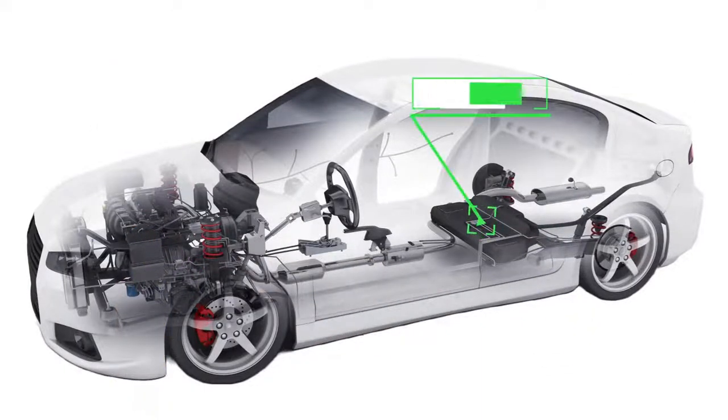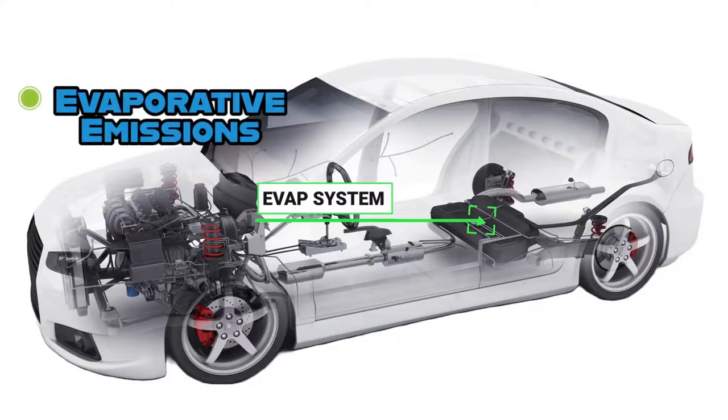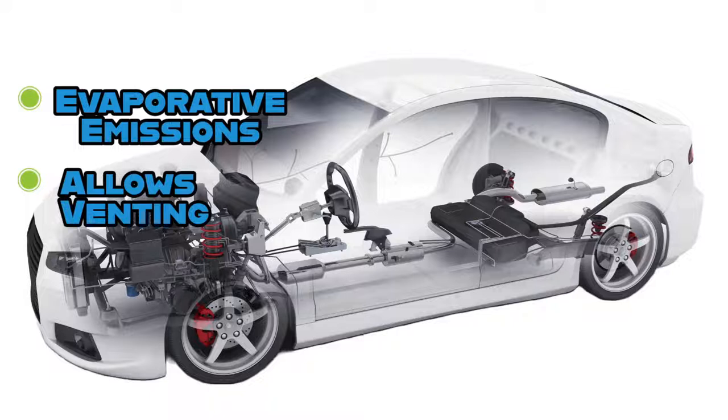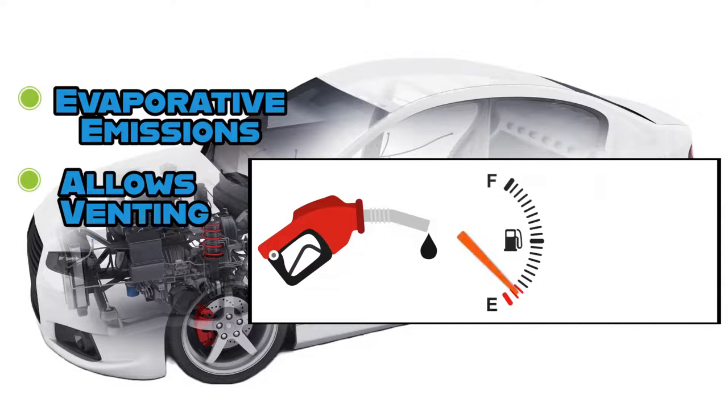Starting at the fuel tank, the storage center, and its ventilation system, what we call the EVAP system. Basically, the EVAP system allows the fuel tank to maintain equal pressure. Pressure changes happen when the tank is being filled up with fuel, fuel being pulled out of the tank by the fuel pump, and with changes in temperature.